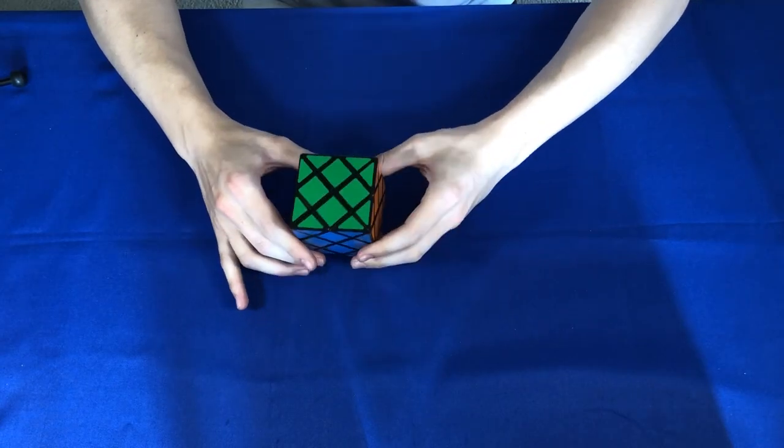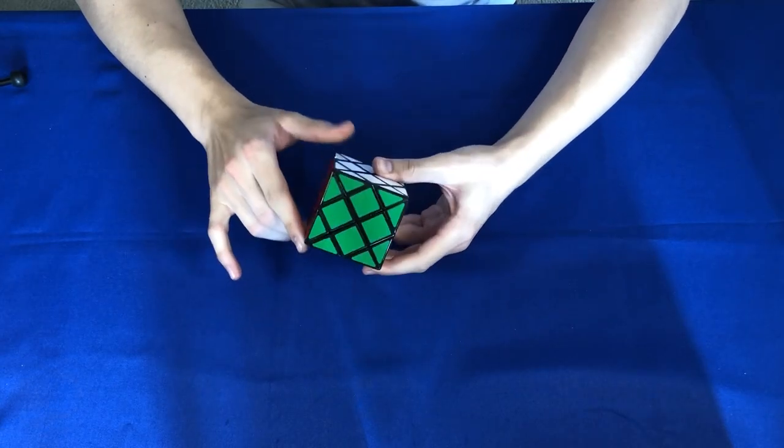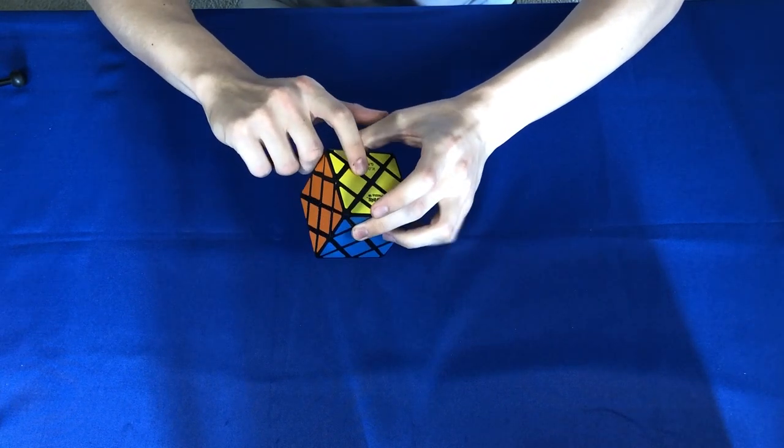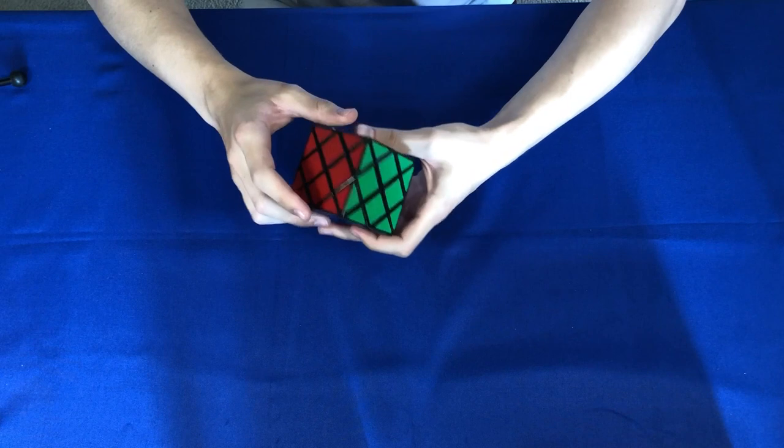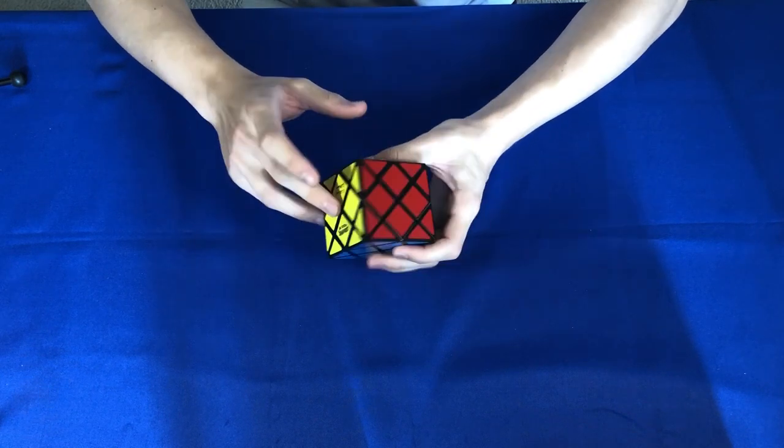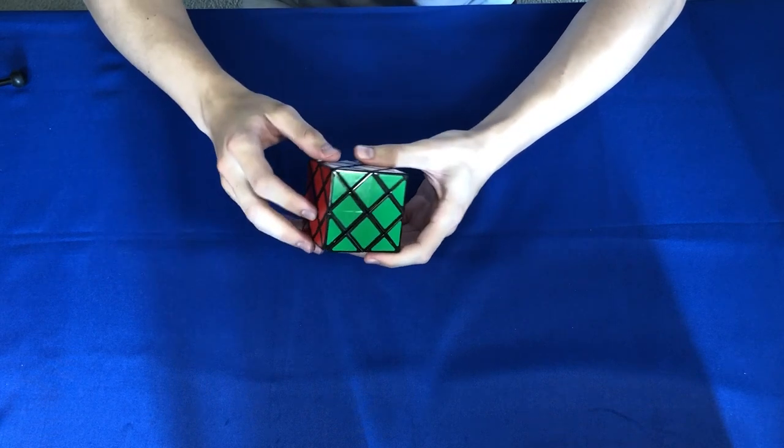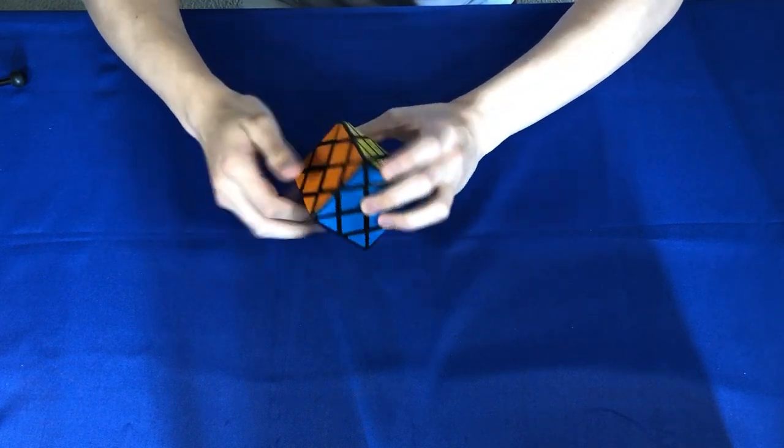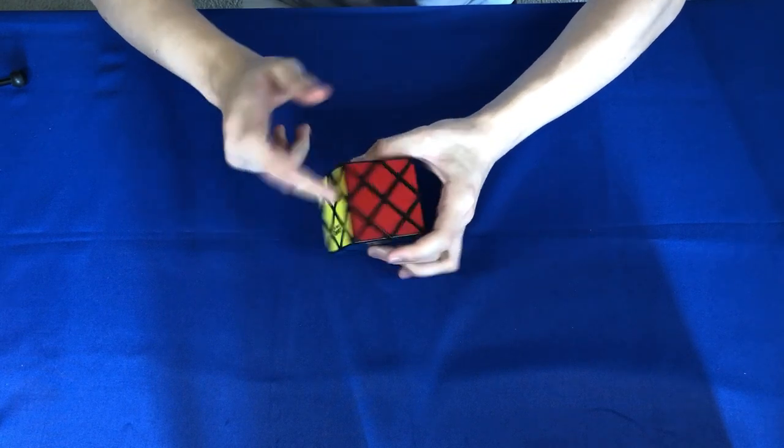So the first thing I noticed with this puzzle is that this does not have the standard color scheme. It doesn't have your standard red, white, blue, orange, green, yellow. Instead, it has sort of a Japanese color scheme. However, the green and yellow are swapped. On a normal Japanese color scheme, you'd have red, white, yellow, orange, green, blue. So in this case, green and yellow are just swapped.